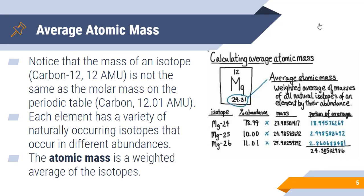One thing I also want you to notice is that the mass of an isotope, for example, carbon-12 has 12 AMU, is not the same as the molar mass on the periodic table. Carbon has a molar mass of 12.01 AMU, or grams per mole. Each element has a variety of naturally occurring isotopes that occur in different abundances. For example, carbon exists as carbon-12, mostly, a little bit of carbon-13, and some trace amounts of carbon-14.